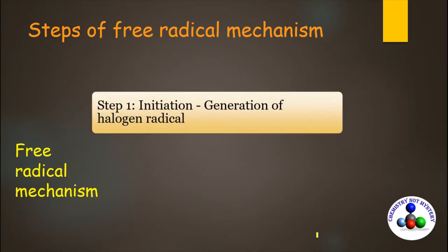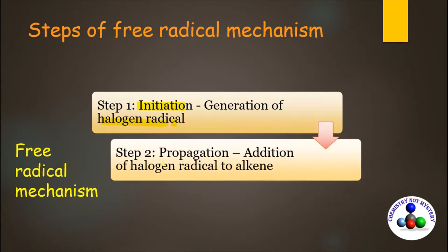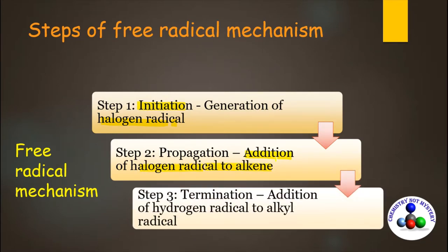To summarize: the first step is initiation, which involves the generation of the halogen free radical. The second step is propagation, which involves the addition of the halogen free radical to the alkene. The third and final step is termination, which involves the combination of free radicals to give the product.